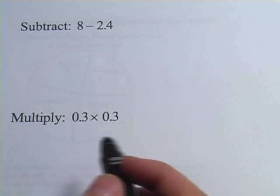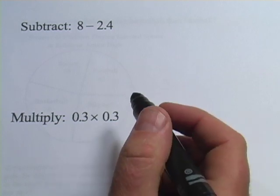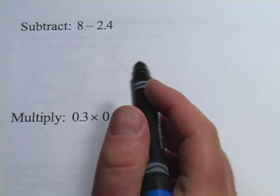In these problems, we're reviewing a lot of the stuff we know how to do with decimals now. The first one says subtract 2.4 from 8.